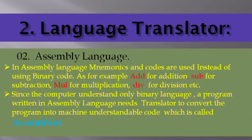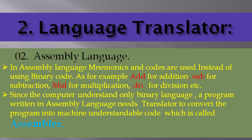Assembly language uses mnemonics instead of binary codes. For example, ADD for addition, SUB for subtraction, MUL for multiplication, DIV for division — rather than ones and zeros. Assembly language is converted or translated into binary/machine language using a program called an Assembler.